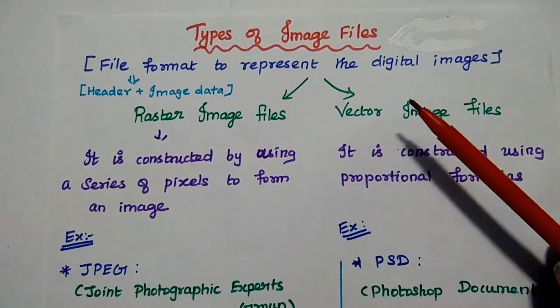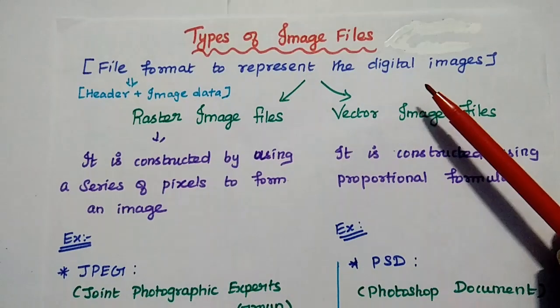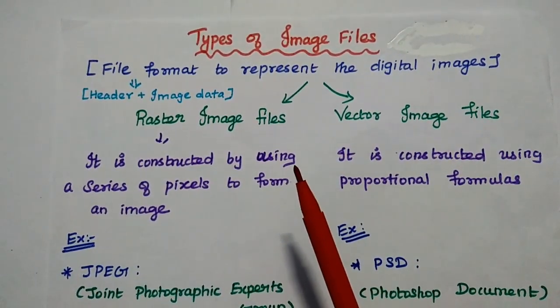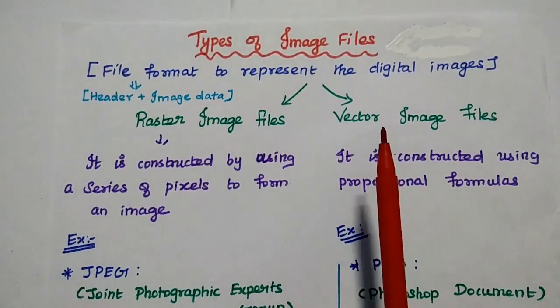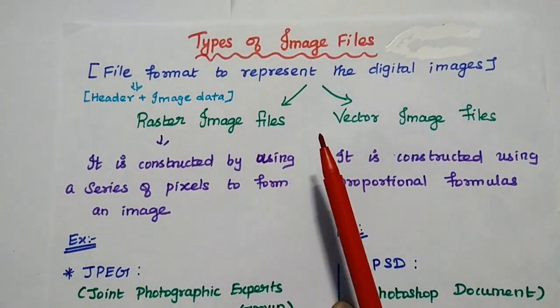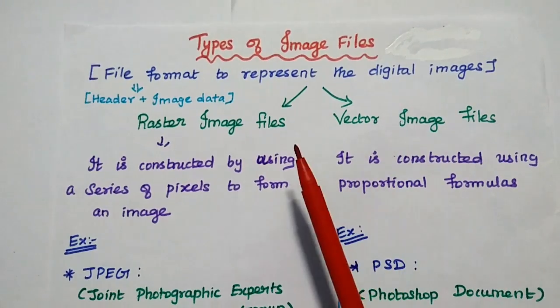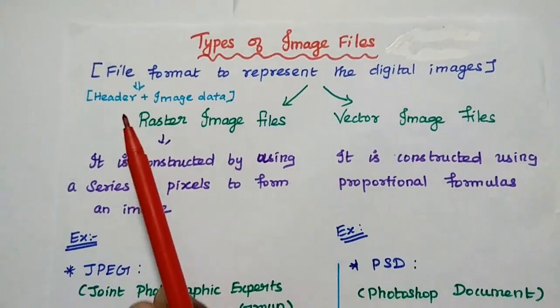Dear students, now we are going to discuss different types of image file formats in detail. In general, image file format is mainly used to represent the digital images. Simply we can say it represents the storage in which the image data can be stored. It is mainly used to store the digital images in a certain format.